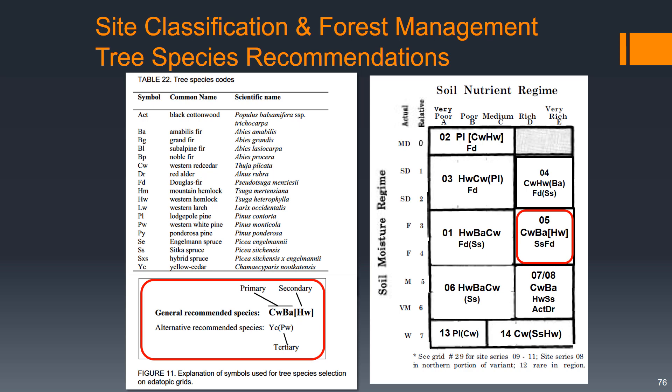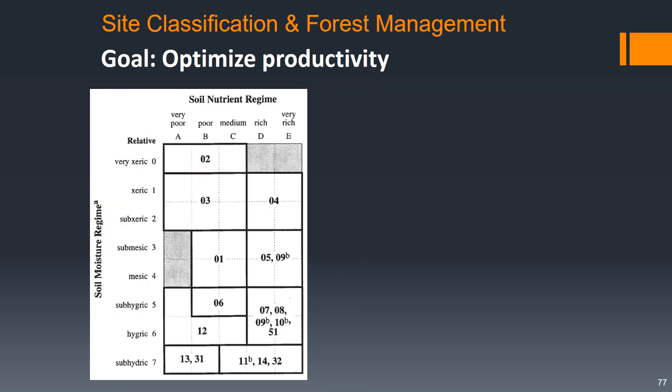For our site series, the primary recommendation is western red cedar and amabilis fir, with western hemlock as a secondary species. An alternative recommended species composition would be Sitka spruce and Douglas fir.